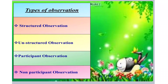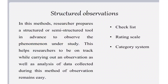There are several types of observation. The main types are structured observation, unstructured observation, participant observation, and non-participant observation. In structured observation, the researcher prepares a structured or semi-structured tool in advance — prior to the observation — such as a checklist or questionnaire, outlining what needs to be observed.